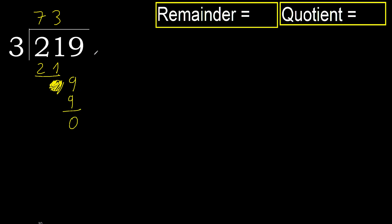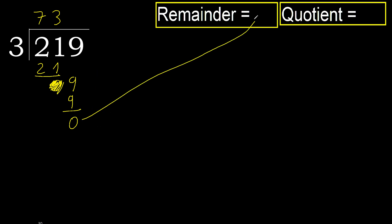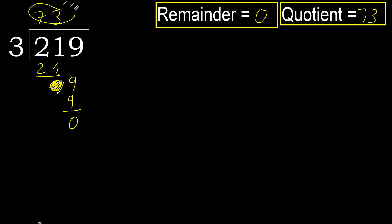Next. That is not a number, therefore finish it. 219 divided by 3 is 73.